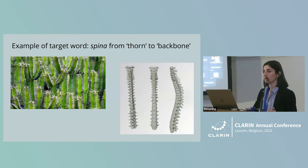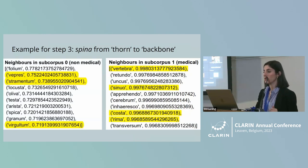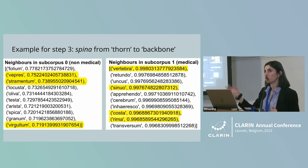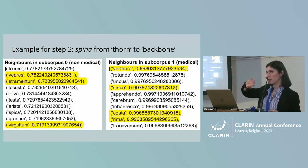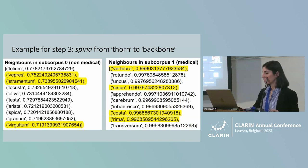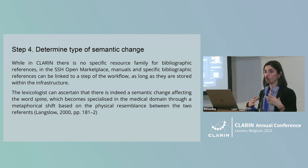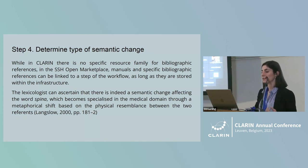As an example from the actual data, we took 'spina', which changed from thorn to backbone. In the non-specialised corpus, the nearest neighbours include words pointing towards the meaning of thorn — like 'vepres' or 'virgultum' meaning thorn bush, or 'stramentum' meaning corn stalk, something pointy. In the medical subcorpus, we have 'vertebra', 'genua' meaning to bend in the shape of an arc, and 'costa' meaning the ribs. From these data, the researcher can determine the type of semantic change that is in place.